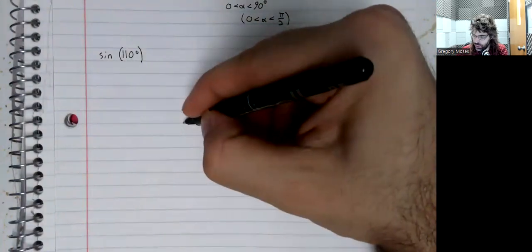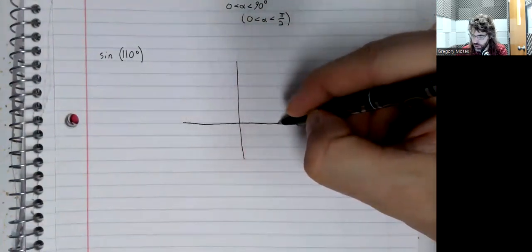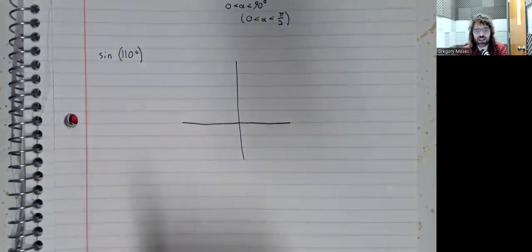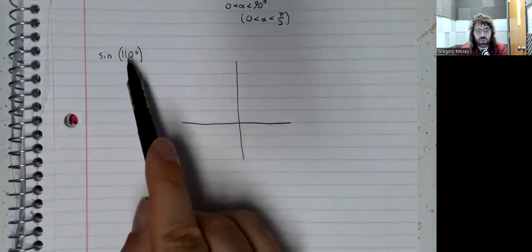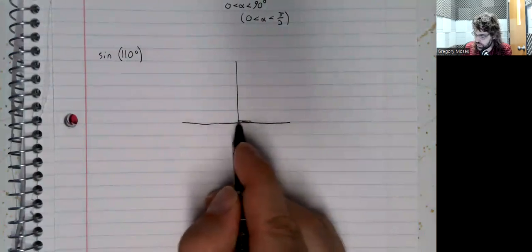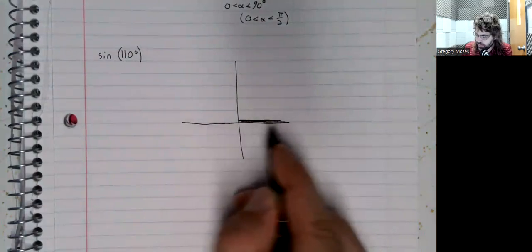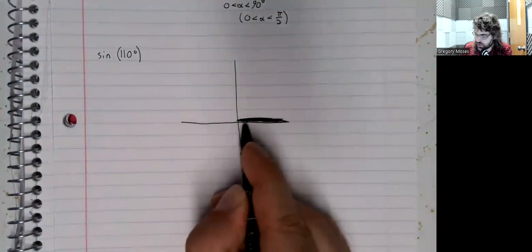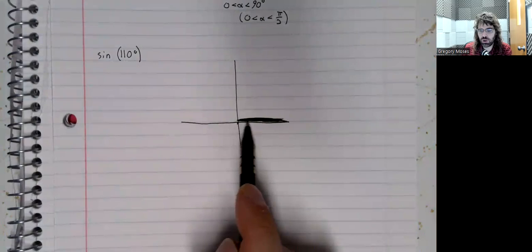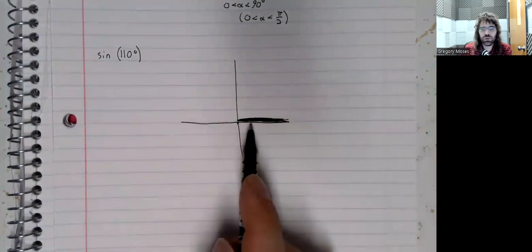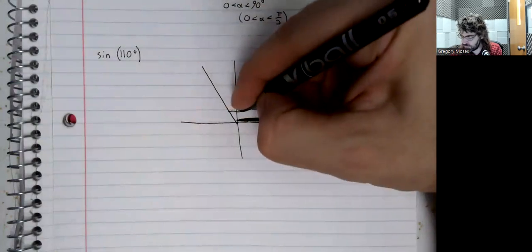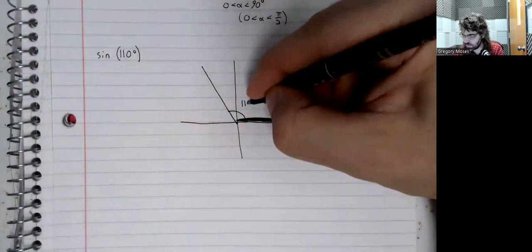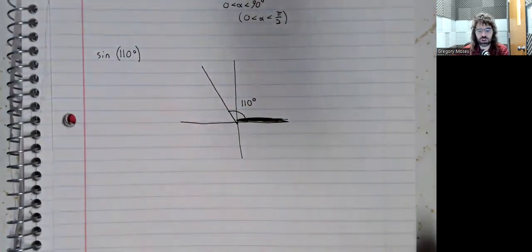We're going to draw the x and the y axis. And then we're going to create this angle, 110 degrees, using this ray emanating from the origin on the x-axis, using this as the initial side of the angle. So 110 degrees around there.